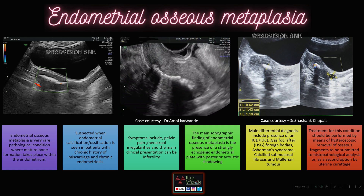Whenever you see dense calcifications or ossifications in the endometrium, one differential you can suspect is endometrial osseous metaplasia. Endometrial osseous metaplasia is a pathological condition where mature bone formation takes place within the endometrium. Whenever you see endometrial calcification or ossification in a patient with a chronic history of miscarriage and chronic endometriosis, definitely suspect endometrial osseous metaplasia. Symptoms can be pelvic pain, menstrual irregularities, and the main clinical presentation will be infertility.